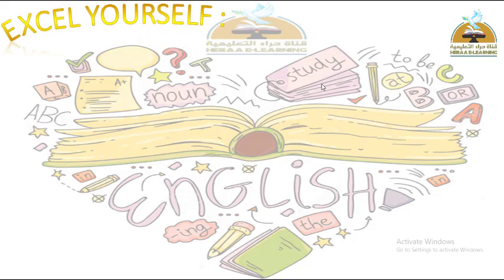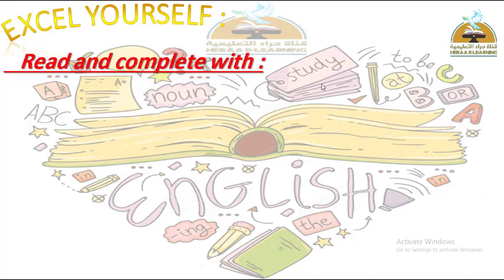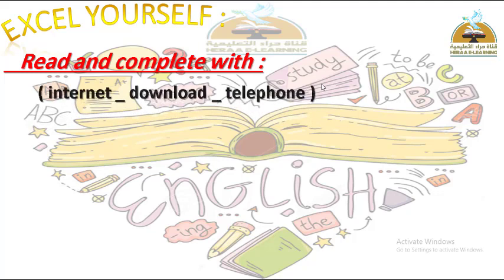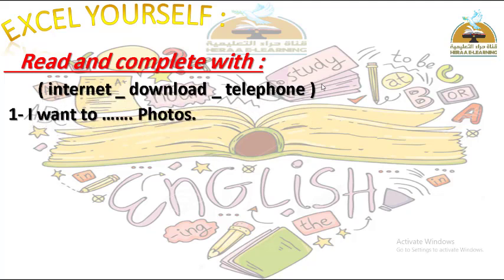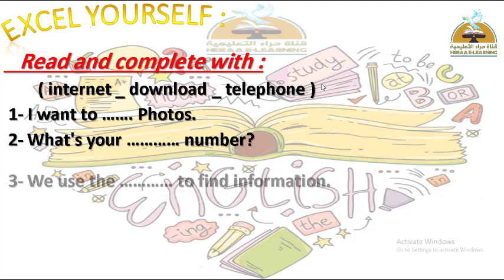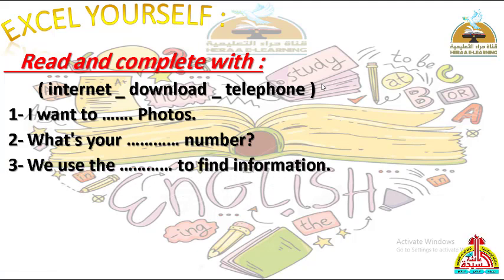Excel yourself - اختبر نفسك سنة تالتة وحله في صندوق مغلق. Read and complete with: internet, download, telephone. Number one: I want to ___ photos. Number two: What's your ___ number? Number three: We use the ___ to find information. Good luck and good boy!